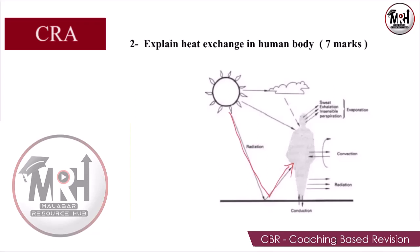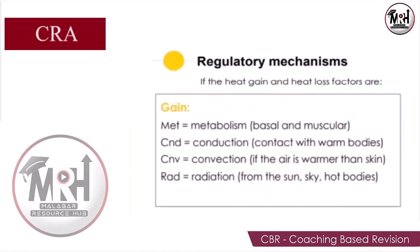We can add heat from the source to the human body. The total value of heat gain and loss is zero. Metabolism is a lot of activities in our body — our body produces a lot of heat through metabolism, which is muscular.